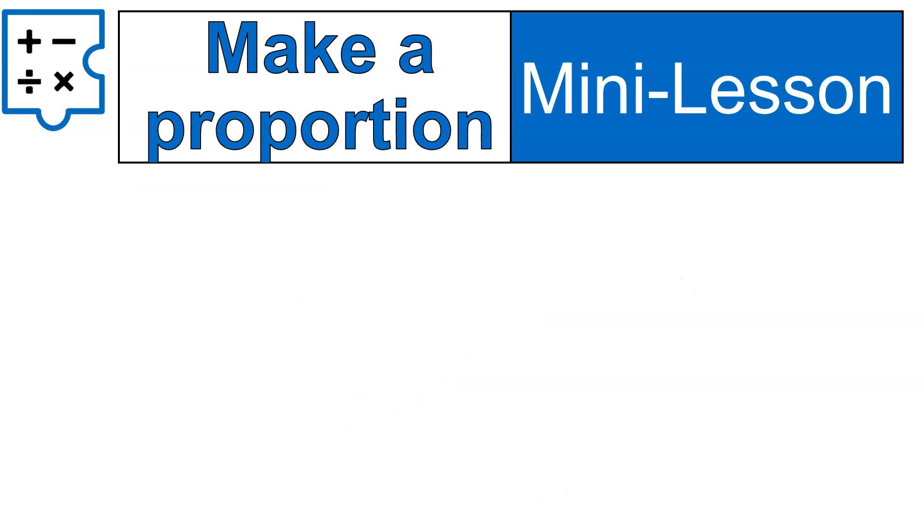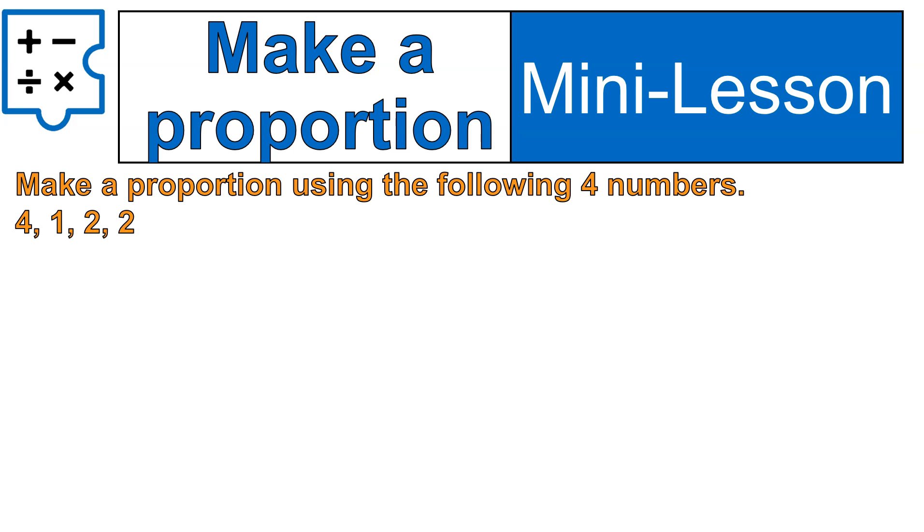What we're going to do now is do this one type of practice that helps us really solidify this idea and show that you completely understand it, and that is to make your own proportion. I want you to pause and practice like we do inside the course quite often. Make a proportion using the following four numbers: 4, 1, 2, and 2. There are a couple different proportions you could make, so go ahead and create one, and then come back to the recording.